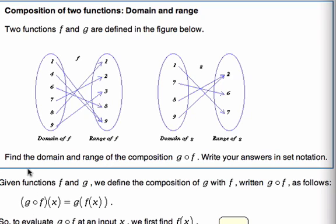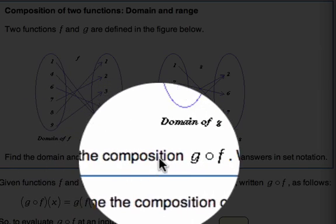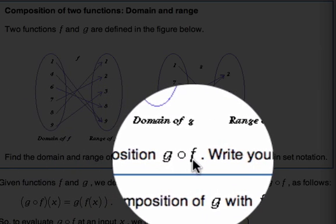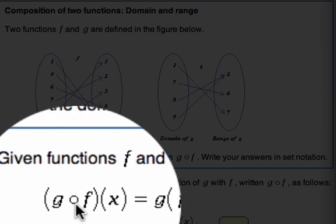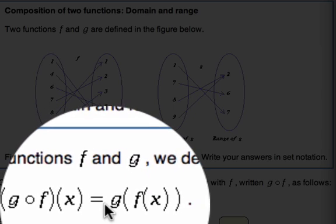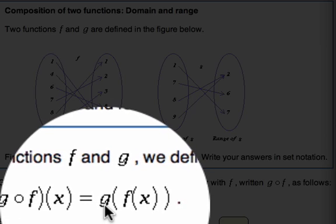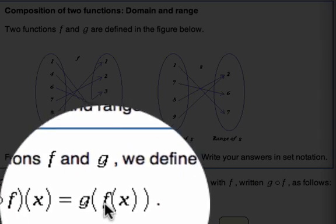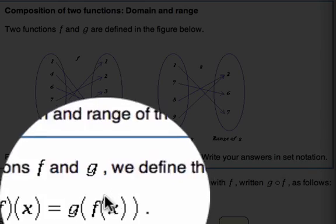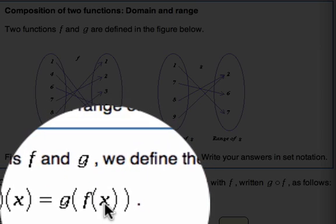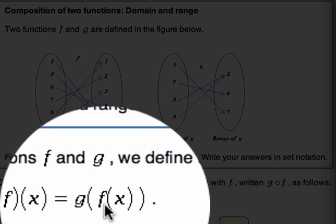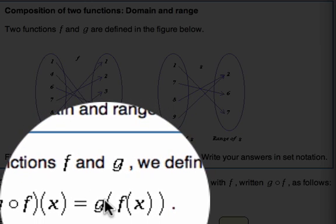Down here we have g. It asks you to find the domain and range of the composition of g with f — you say g of f — and write your answer in set notation. So first, you go ahead and start off with g composited with f of x, and rewrite it as g of f of x. I think of f of x as being the inside function, and that's the function you look at first. You're going to plug x in, get the result, then take that result and plug it into your g function. It's kind of like substitution.